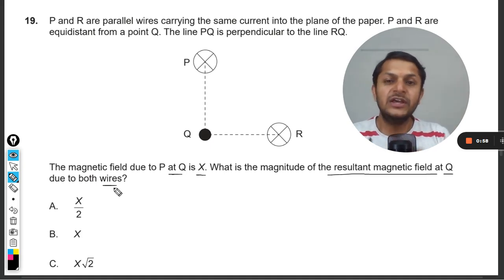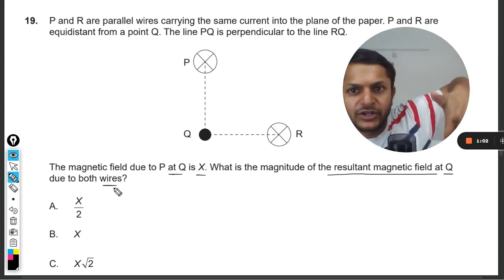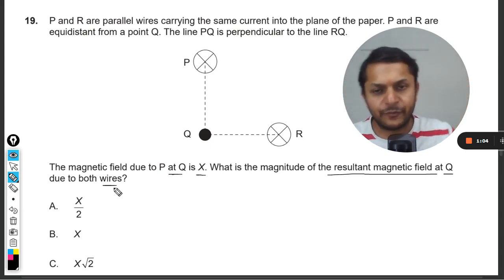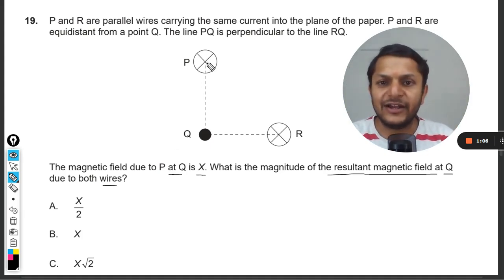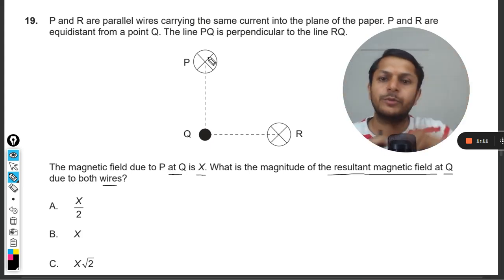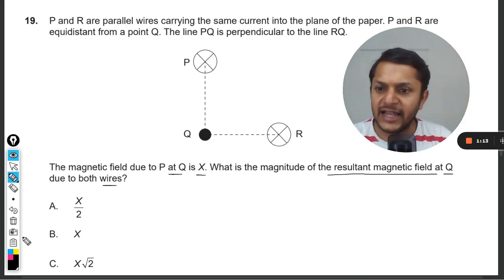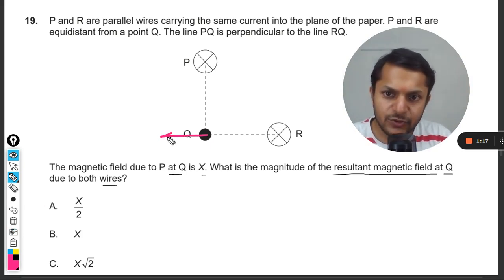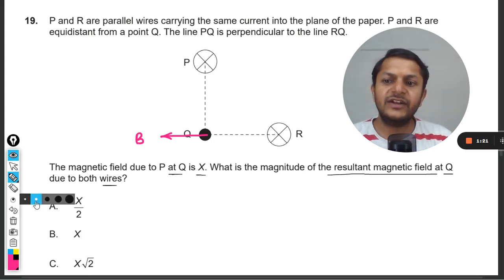You see, this is the right hand for me, and so the thumb will be pointing towards the current in the direction of P. So the current is like entering into it, so I keep my hand like this, and my fingers will be pointing towards Q. So the palm will be pointing towards left hand side, so clearly this is going to be the first magnetic field.